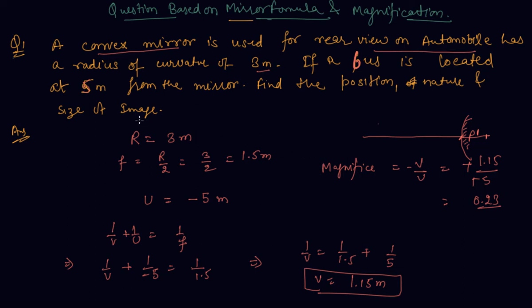The size of the image is 0.23 times the size of the object. The image will be virtual and erect because in case of convex mirror the image is always virtual and erect. Now let's discuss another question based on the same formula.